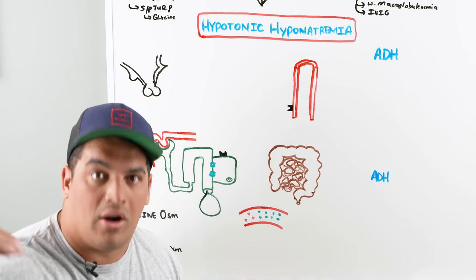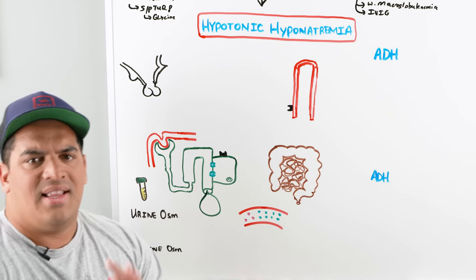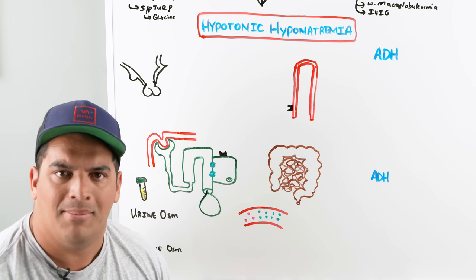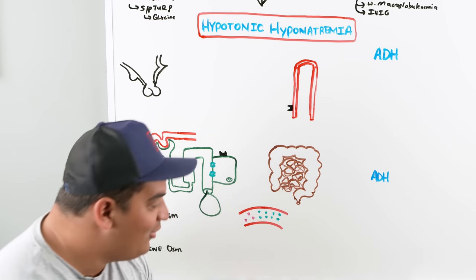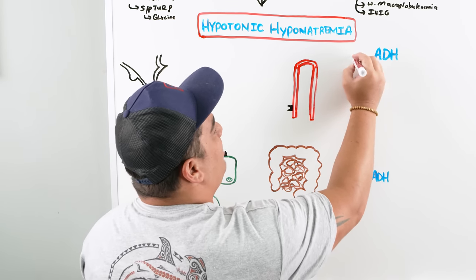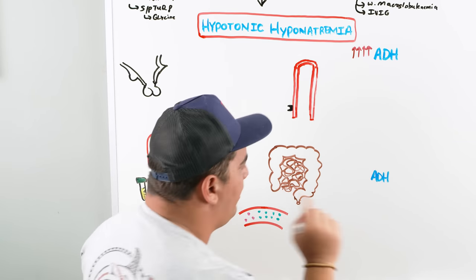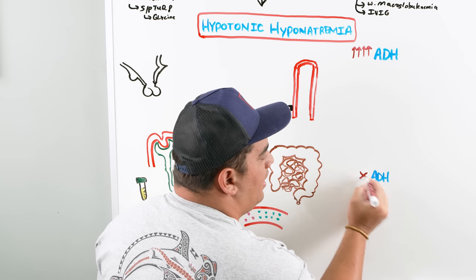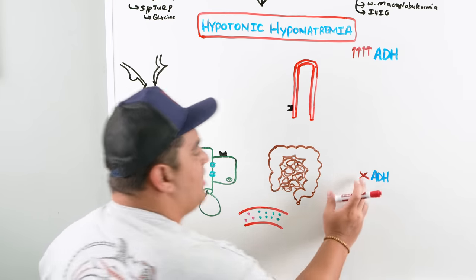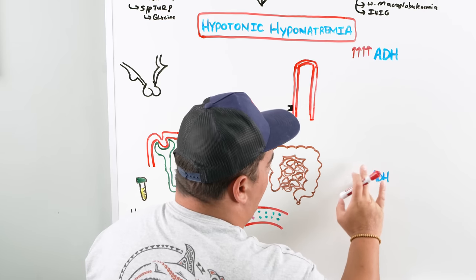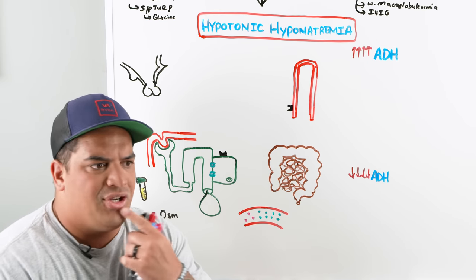With true hypotonic hyponatremia confirmed, there's more water than sodium in the body. The most common cause is that ADH levels are very high. There are only a few causes where ADH is actually off or producing very little ADH. So ADH is either on (very elevated) or off (very low) — that's the next branch point in our diagnostic approach.